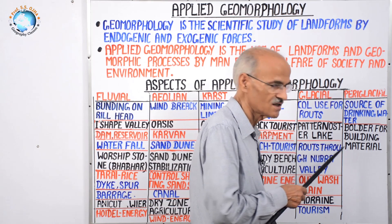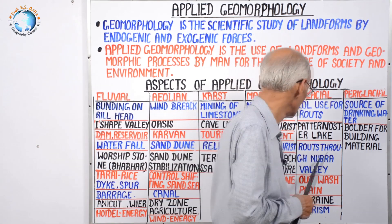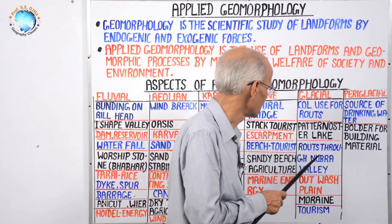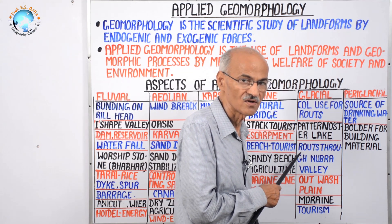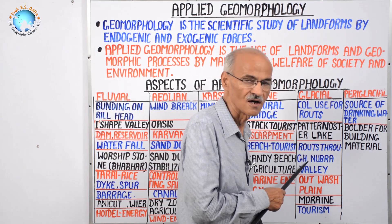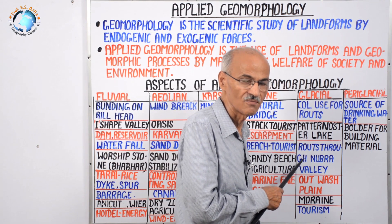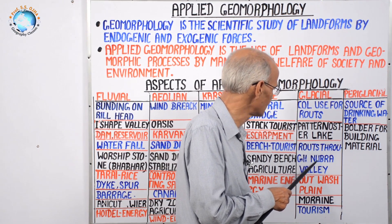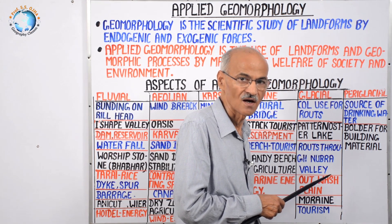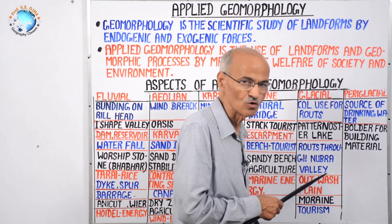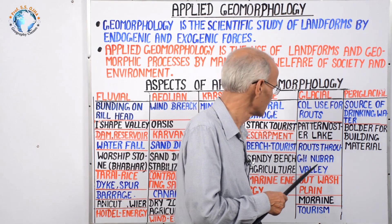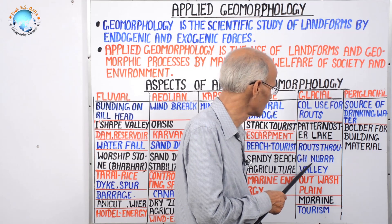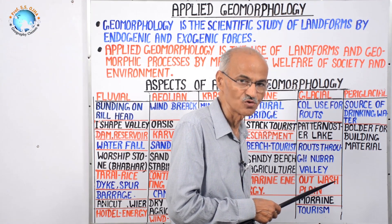Next is routes through Nubra Valley. Sometimes glaciers come down and the valley is U-shaped with a very flat and smooth base, so people follow this track. The example is Nubra Valley in Jammu and Kashmir, where the Indian Army follows this valley to reach from Leh to Siachen Glacier to protect the border. A number of glaciated valleys are used as routes.